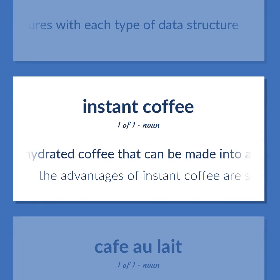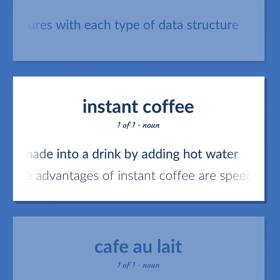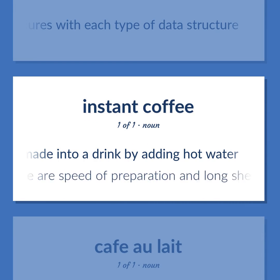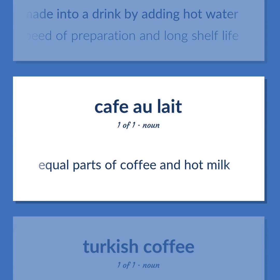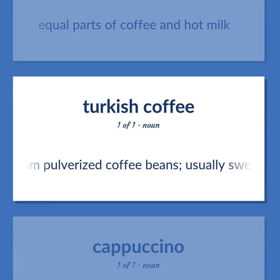Instant coffee: dehydrated coffee that can be made into a drink by adding hot water. The advantages of instant coffee are speed of preparation and long shelf life. Café au lait: equal parts of coffee and hot milk. Turkish coffee: a drink made from pulverized coffee beans, usually sweetened.